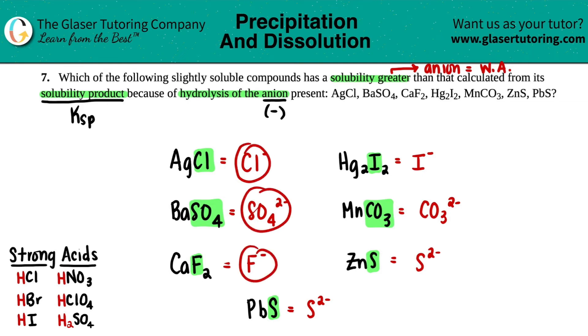So all we have to do is just match up: are any of these anions of a weak acid? There's tons of weak acids out there, but there's only six strong acids in this world. So it's just easier to just know your six strong acids and see if this anion is coming from a strong acid or not.